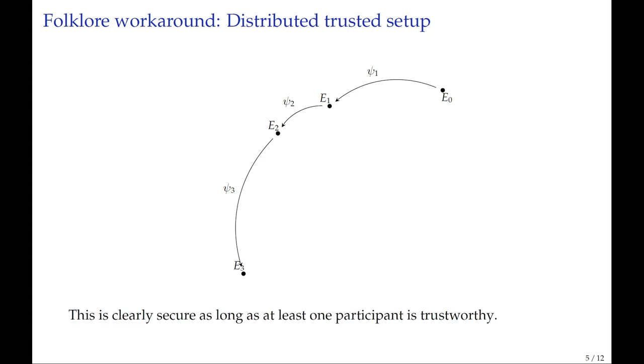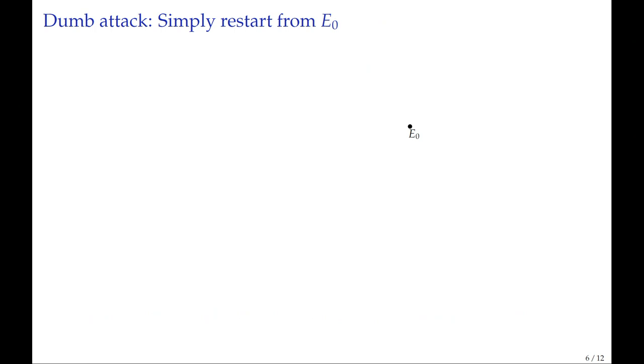This is clearly secure as long as at least one of these participants is trustworthy. But there's a subtlety that has often been glossed over. The issue is how can you be sure that people really did the right thing? You can imagine an attack where the last participant decides to start over from the starting curve and produces this random walk. It looks as random as any other curve, but this one participant actually knows a connection, so they know the endomorphism ring.